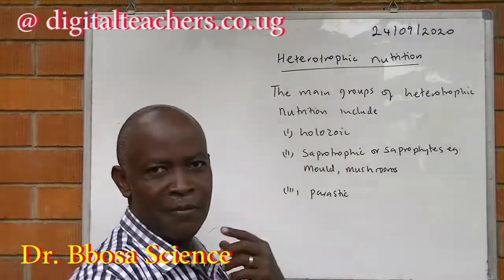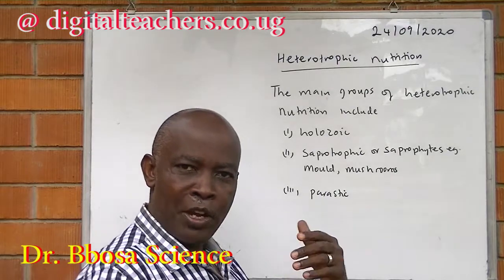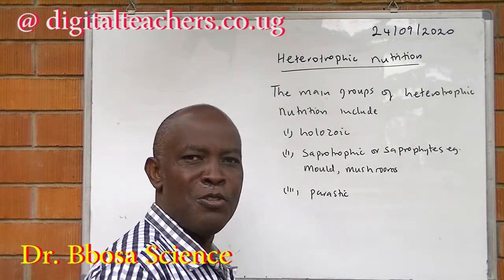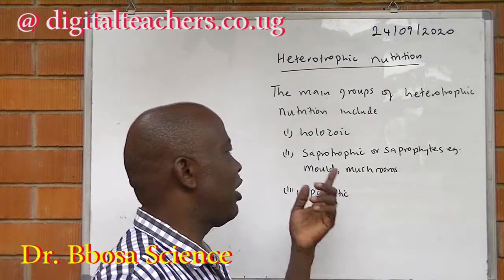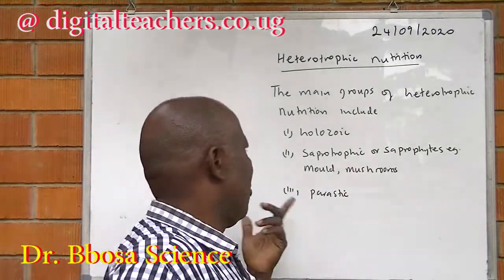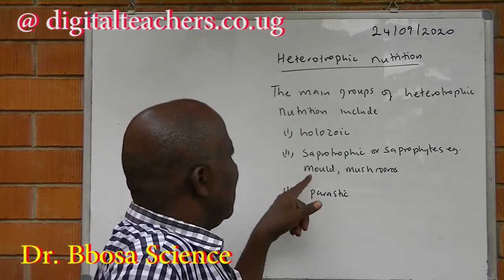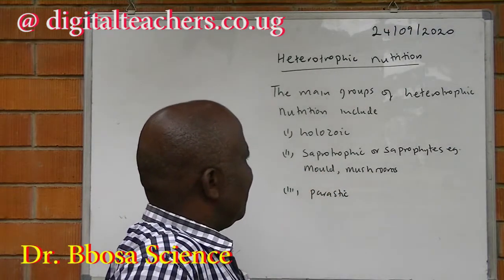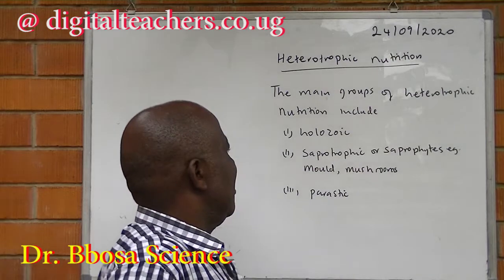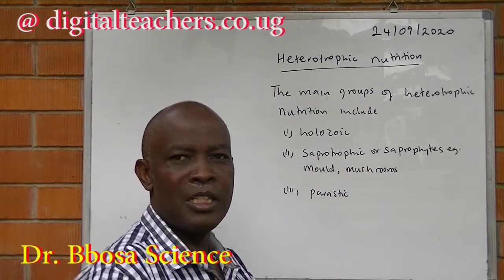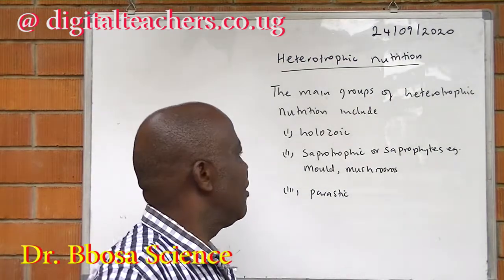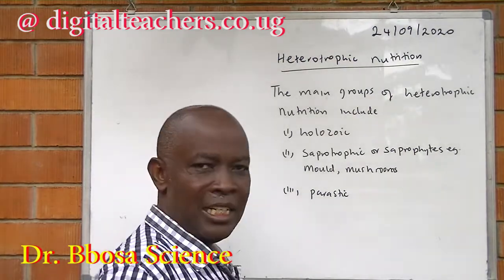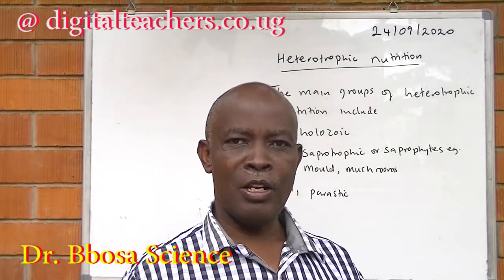For example, man: we eat, we digest, we absorb the digested food, we use the digested food, then we defecate the undigested food. Two, saprotrophic or saprophytes — for example, fungi and mushrooms — these feed on dead decomposing matter. Three, parasitic — these feed on living matter, for example, ringworm.